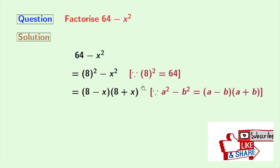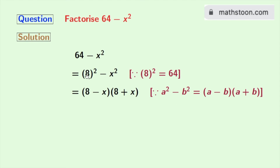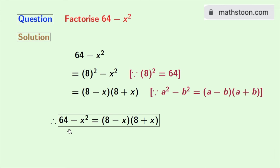Applying this formula, we get 8 square minus x square is equal to (8 minus x) times (8 plus x). Now we cannot factorize this further, so we will stop. So finally we have 64 minus x square is equal to (8 minus x) times (8 plus x).